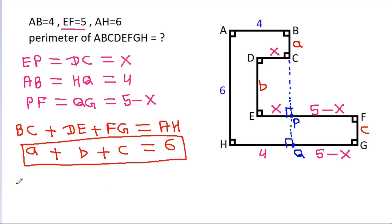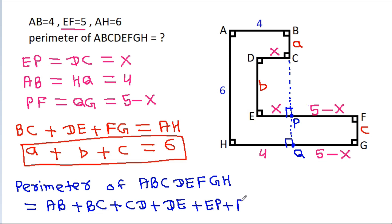And now, perimeter of ABCDEFGH will be equal to AB plus BC plus CD plus DE plus EP plus PF plus FG plus GQ plus QH plus HA.